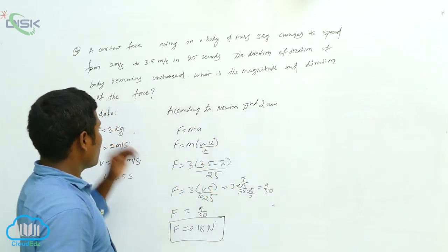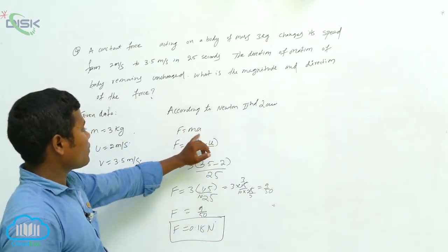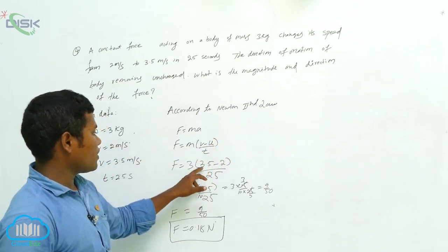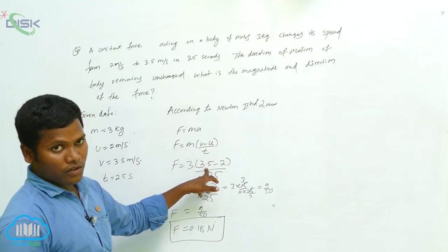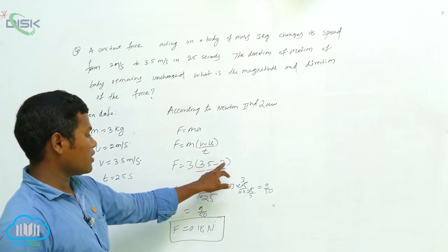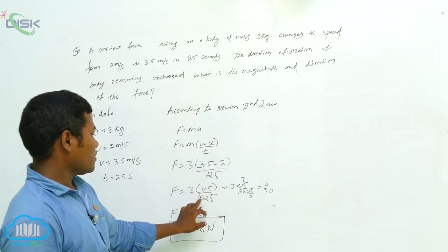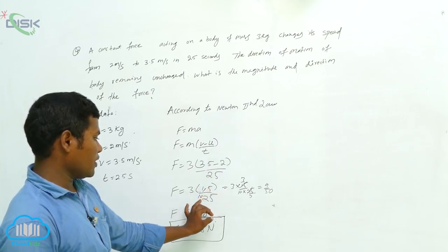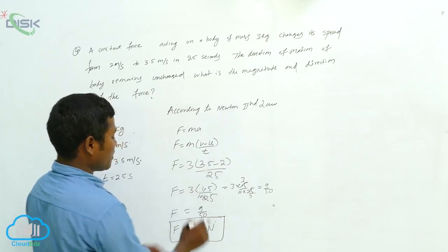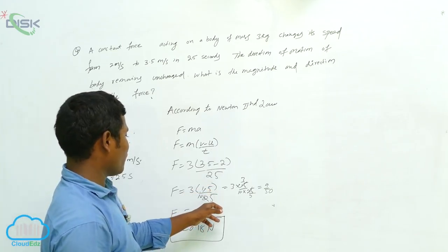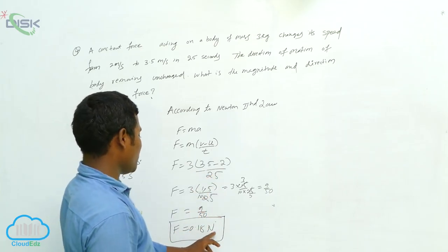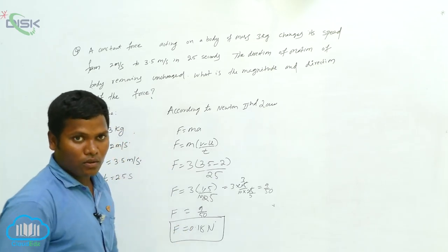According to Newton's second law, F equals m times a, which is F equals m into (v minus u) divided by t. So m is three, v minus u is three point five minus two equals one point five, divided by twenty-five. Removing the decimal: three into fifteen by two fifty, simplifying gives nine by fifty, which equals zero point one eight newtons.